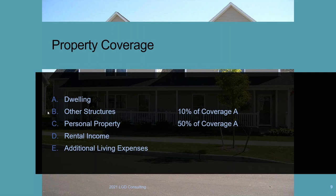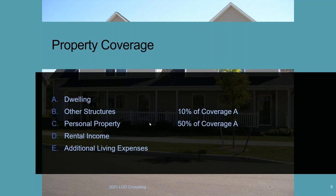Coverage C is personal property, covered anywhere in the world. The standard limit is 50% of Coverage A. So with a $600,000 Coverage A, you get $300,000 to replace your belongings. Personal property means easily movable objects — clothes, furniture, pots and pans, salt and pepper shakers. Under dwelling coverage there is a slight reduction if property is away from the home, but 50% of Coverage A is generally a good amount. Coverages A, B, and C are direct loss coverages.